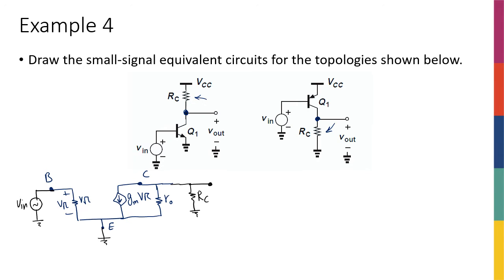A constant voltage source such as VCC, which is a DC supply, is seen as ground in the AC small signal analysis. So RC is actually between V_out and ground. When you have a DC voltage in this small signal model — we're modeling only things that are changing — DC voltages are not changing, so we zero them. To zero a voltage source is a short circuit, so VCC connects to ground, which is why we get this model.